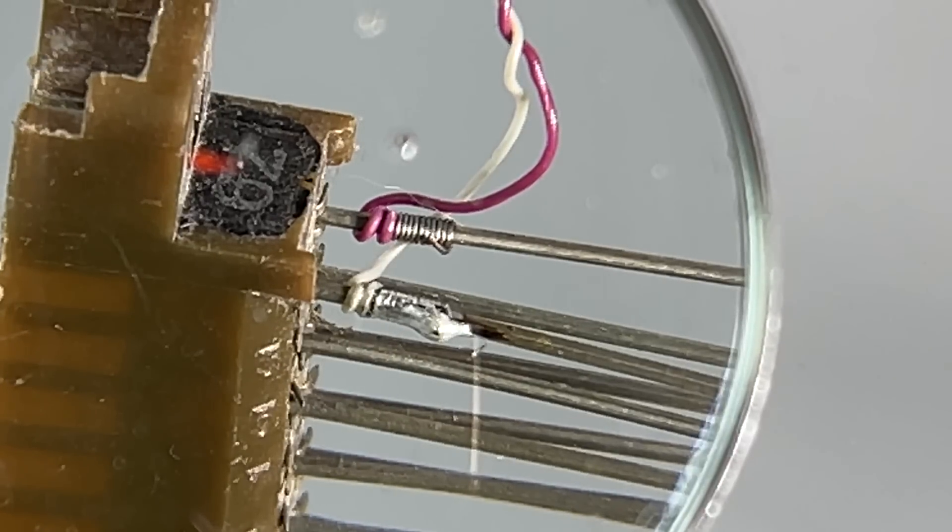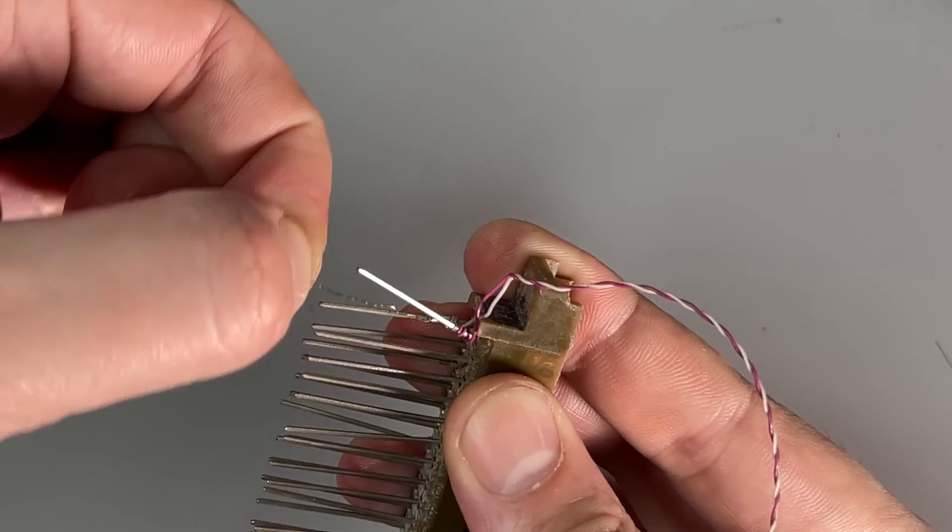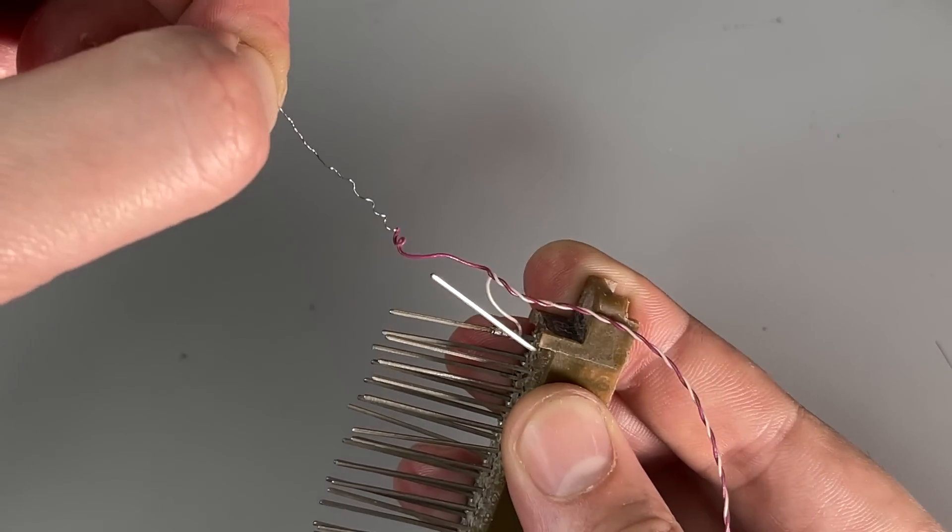And in the case a correction is needed, it's quite easy to unwrap it. Then you can straighten the wire and try again.